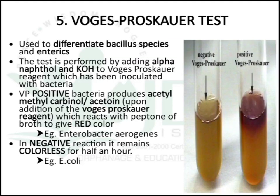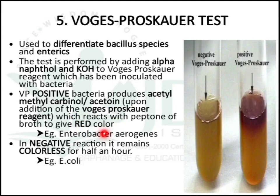The next test is the Voges-Proskauer test, mainly used to differentiate Bacillus species from enteric species. It is performed by adding alpha-naphthol and potassium hydroxide to Voges-Proskauer reagent inoculated with bacteria. VP-positive bacteria produce acetyl-methyl-carbinol or acetoin, which reacts with peptone to give a red color. A positive organism gives red color — example: Enterobacter aerogenes. A negative reaction remains colorless for half an hour.